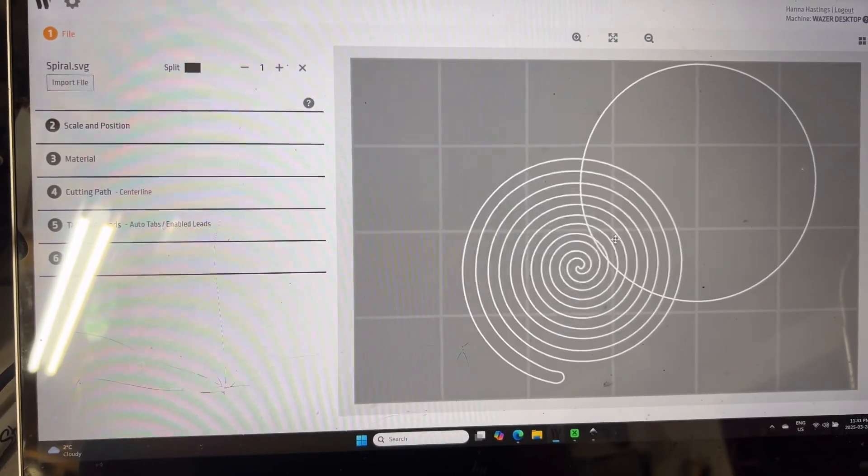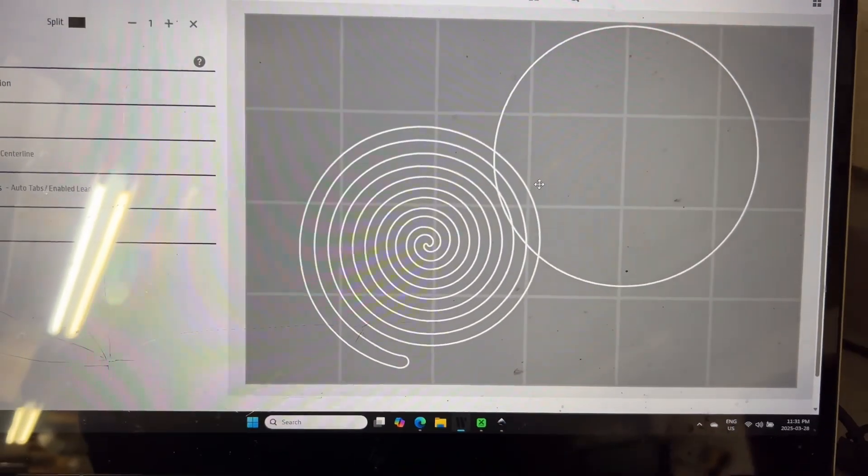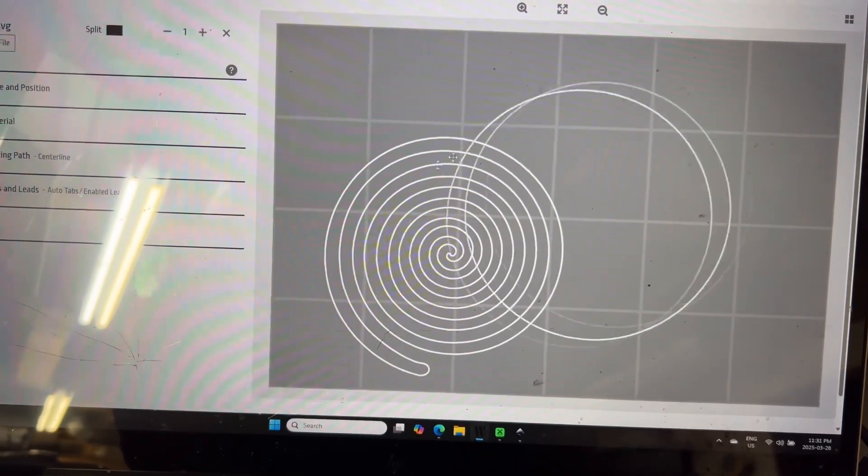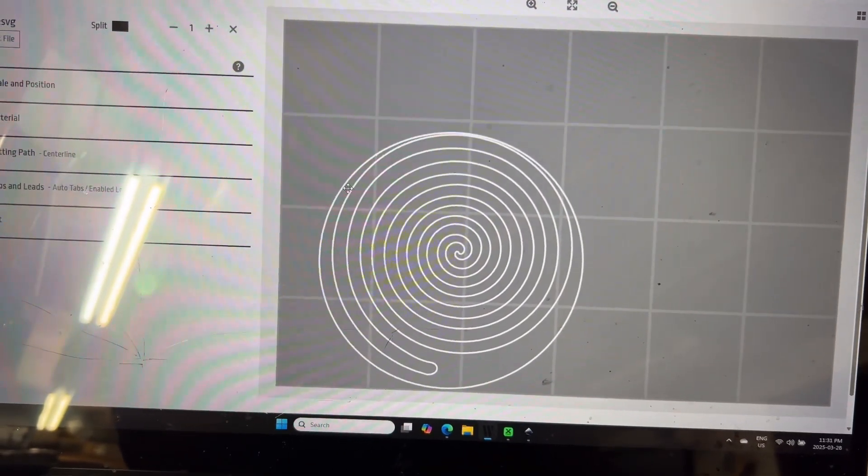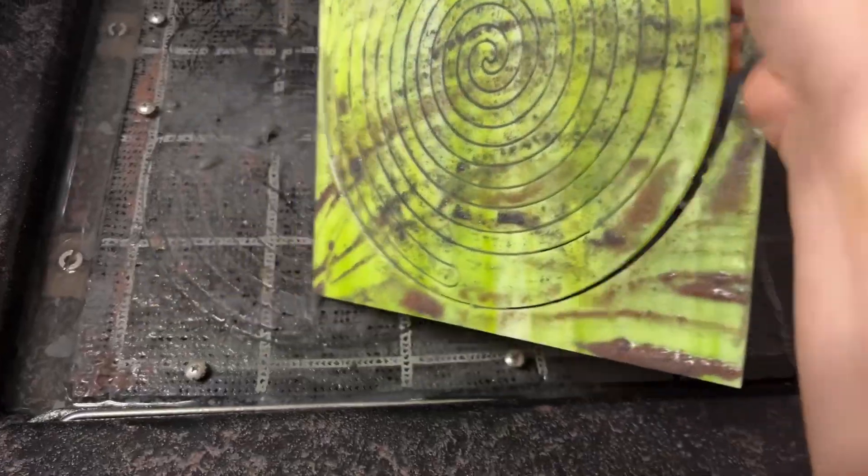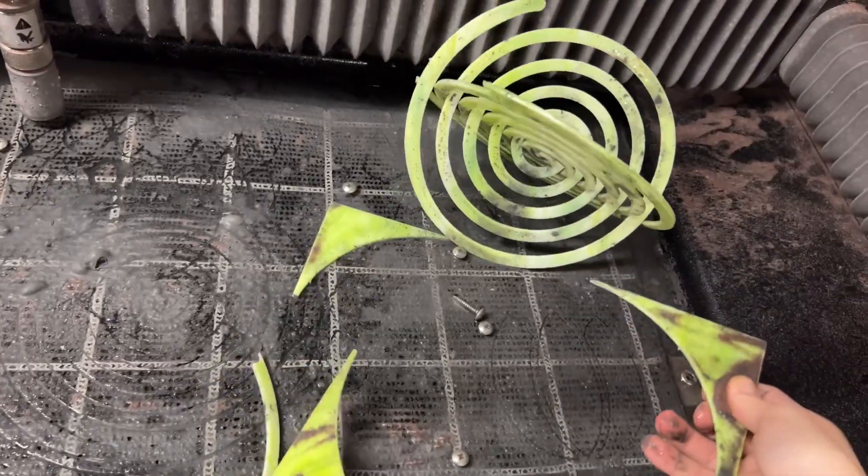I set them up as two separate runs of the same file so Wazer would know to stop in between them. This is one of those small things that makes a big difference. If I tried to cut everything at once, the spiral could pop out too early and mess up the second cut.